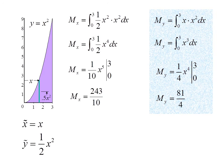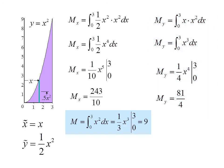Now I need to find the mass. The mass is the integral from 0 to 3 of x² dx, or one-third x³ from 0 to 3, or 9. And I should say, even though I'm calling it the mass because this steel plate has constant density and thickness, what we're really finding is the area.